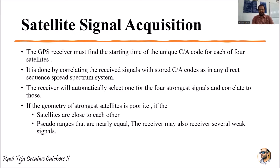Each satellite will have its unique C/A code. Once at least one satellite's C/A code is found, automatically all the remaining satellites can be connected with the satellite receiver and communicated with the GPS receiver.